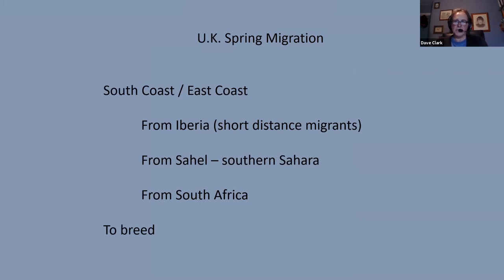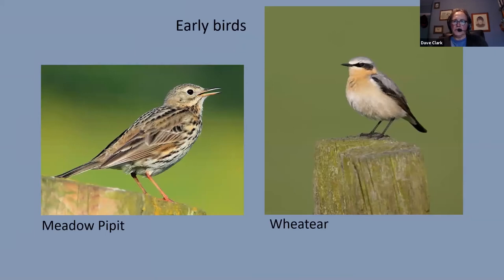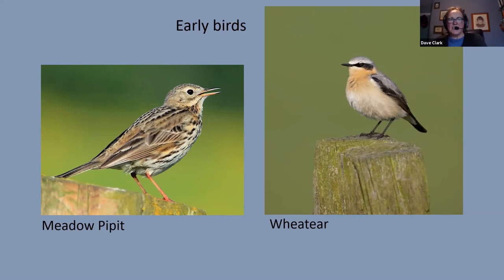These can be early migrants: the Meadow Pipit and Wheatear are both seen on the ground. Unfortunately, although they come in numbers, the Meadow Pipit likes landing on grasslands, so they get disturbed very quickly — if you haven't caught them at 6 o'clock in the morning, they've gone. On the coast, Wheatear are more confiding and you can get quite close to them.